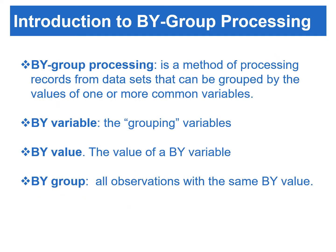By-group processing is a method of processing records from data sets that can be grouped by the values of one or more common variables. These grouping variables are called the by-variable. The value of a by-variable is called the by-value. A by-group refers to all observations with the same by-value.